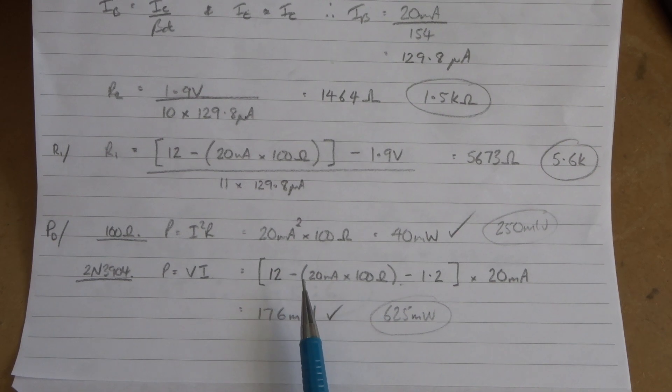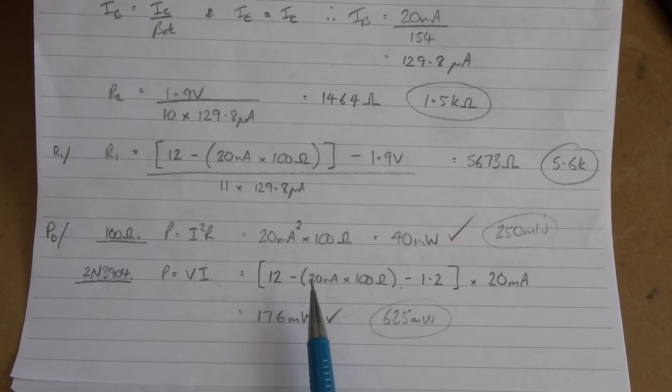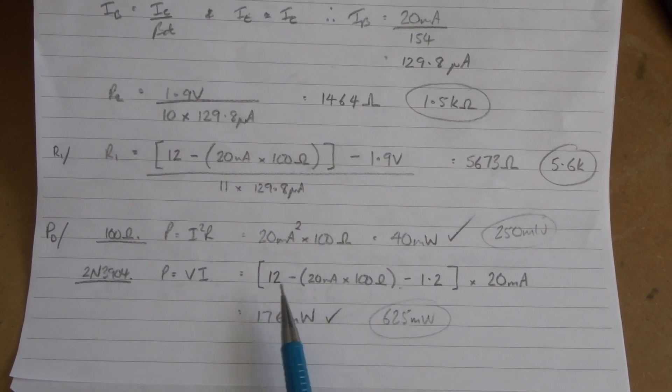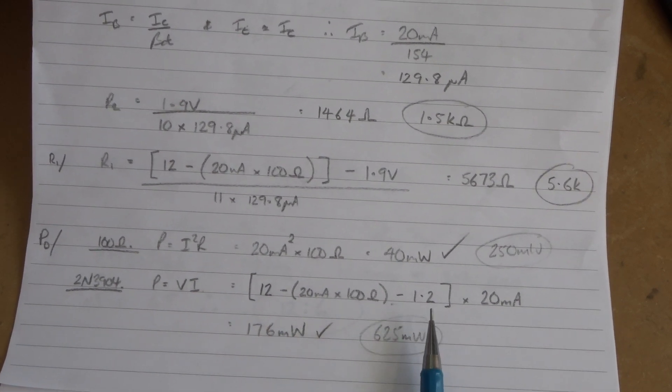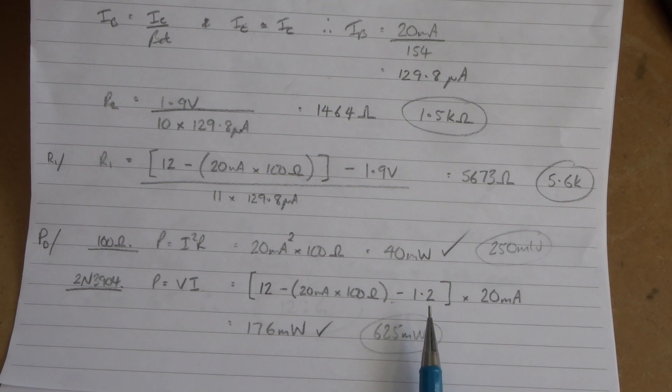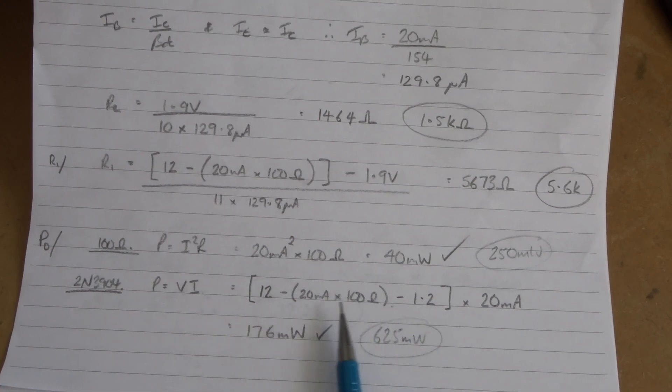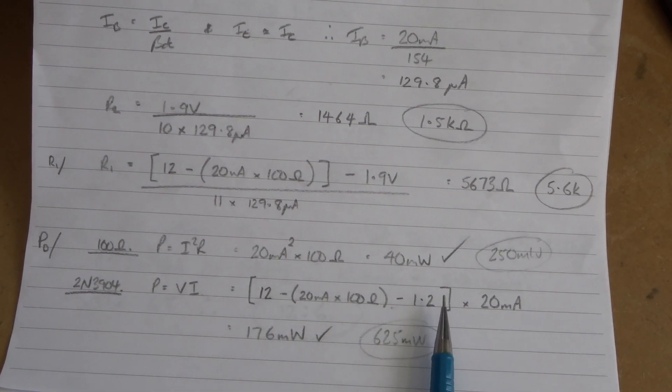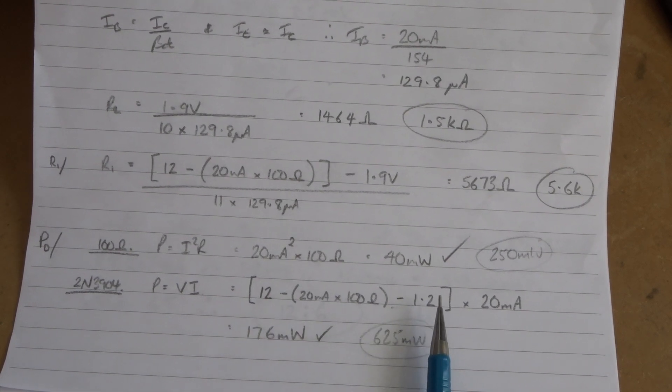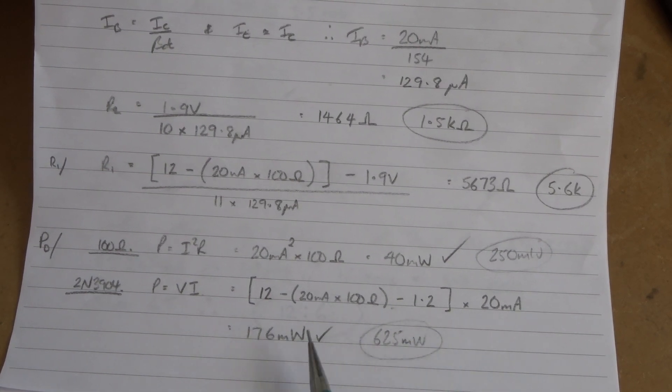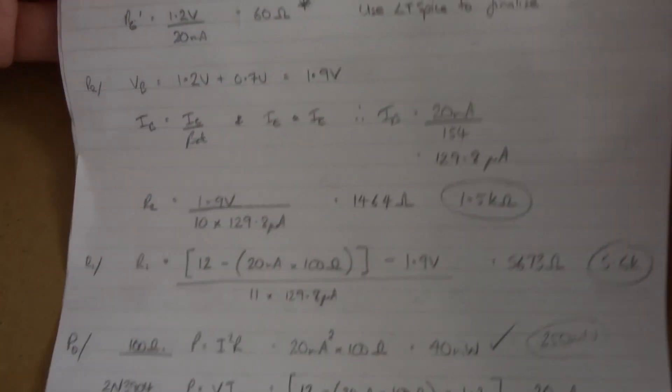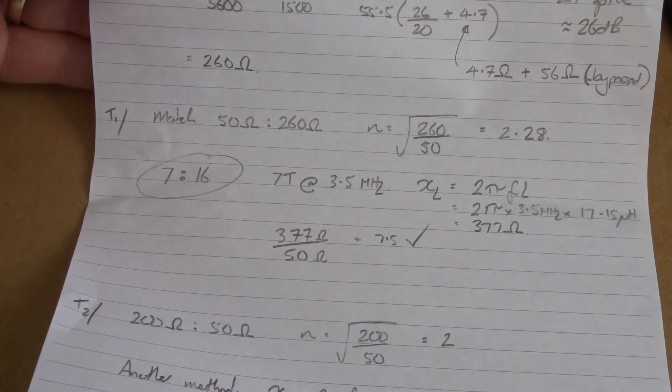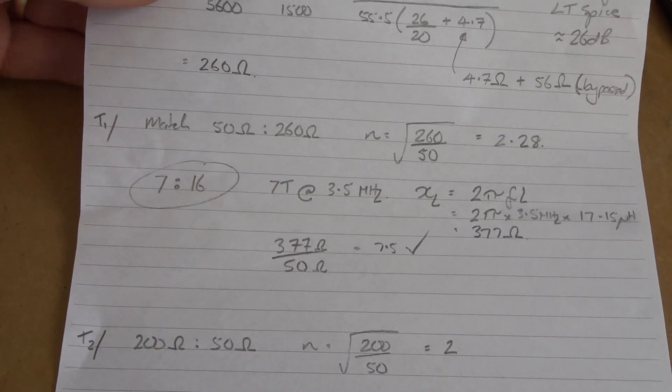For the transistor, I'm working out the voltage drop on the device itself. The voltage at the collector would be 12 volts minus the voltage across that 100 ohm resistor minus the 1.2 volts on the emitter. So we've got VCE and multiply that by 20mA - it comes to 176mW, well within the 600 odd for that device.